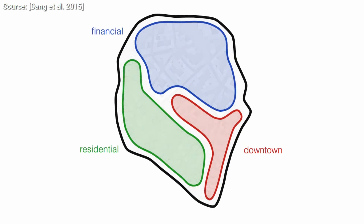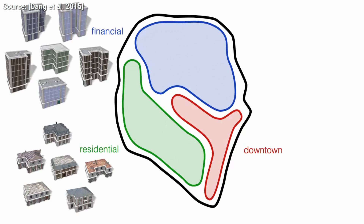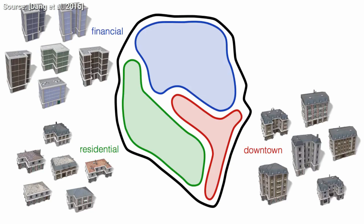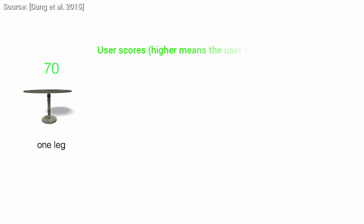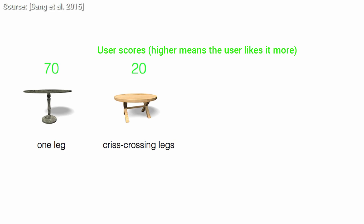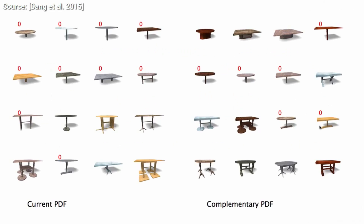It learns the preference of the user, then creates and recommends a set of solutions that are expected to be desirable. In this example, we are looking for tables with either one leg or crossing legs. It should also be properly balanced, therefore if we see any of these criteria, we'll assign a high score to these models. These are the preferences that the algorithm should try to learn.